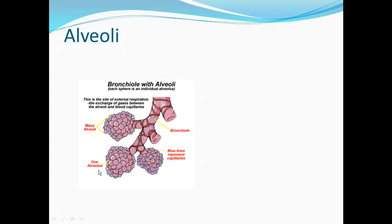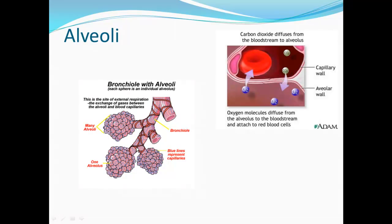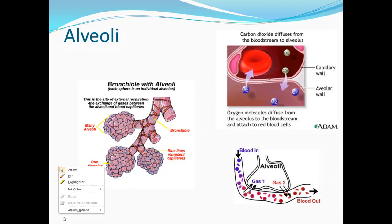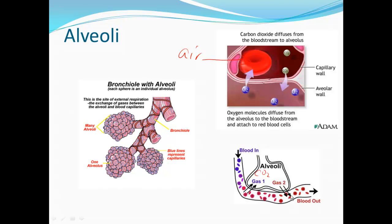The alveoli look like a bunch of grapes — singular: alveolus, plural: alveoli. The bronchioles lead into them. It is at the alveoli that oxygen exits the air in the alveoli and enters the bloodstream. Simultaneously, carbon dioxide exits the bloodstream and enters the alveoli. Blood coming in arrives from the heart via the pulmonary artery; blood going out leaves via the pulmonary vein.